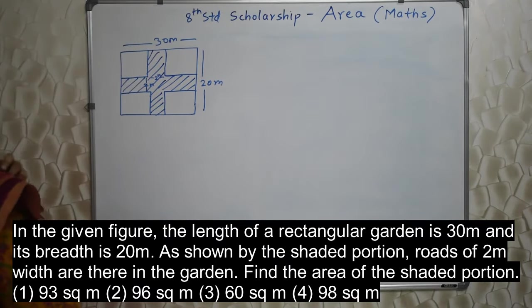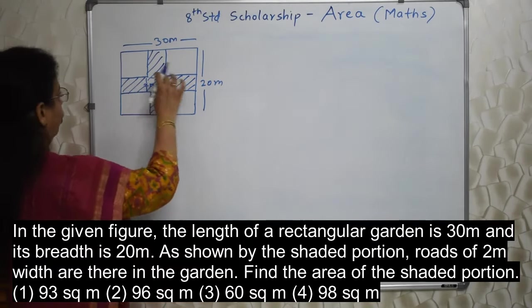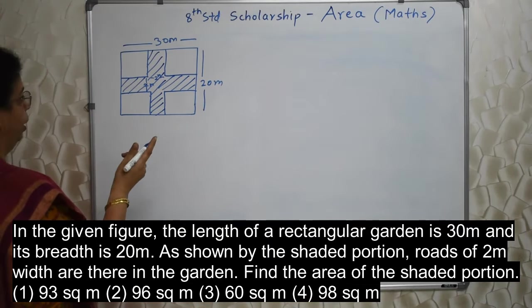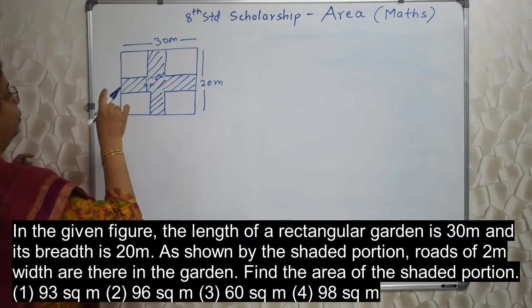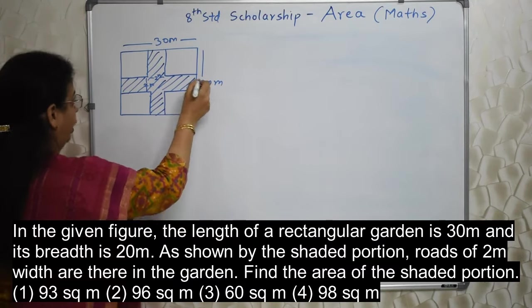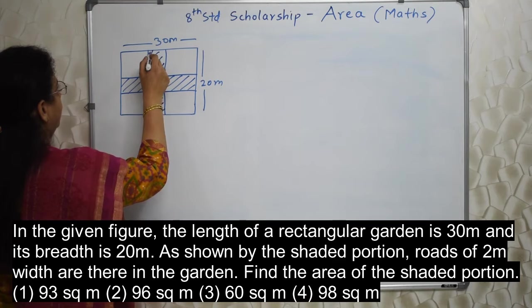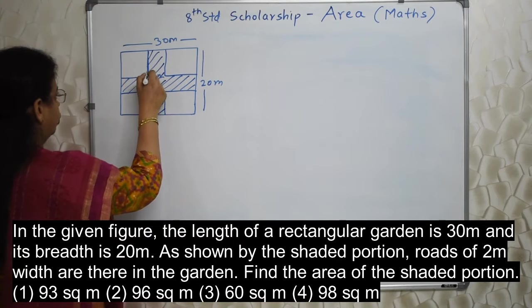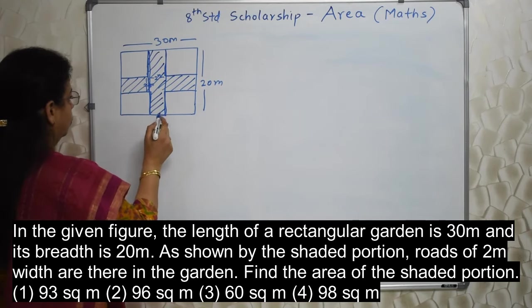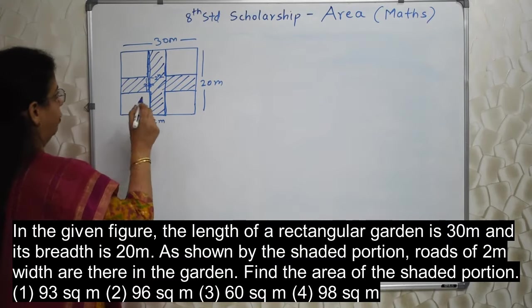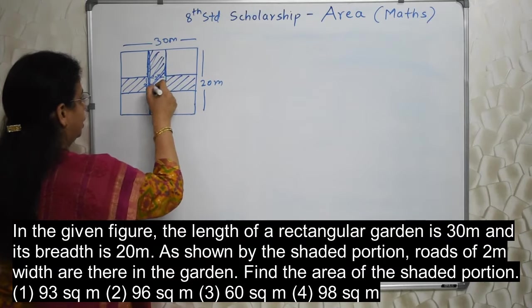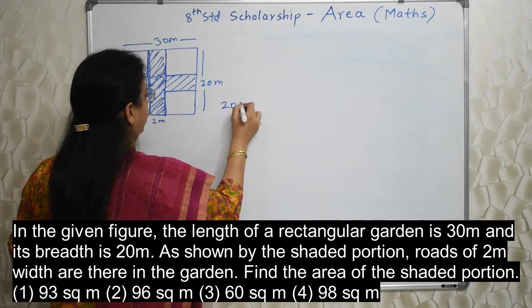How to find out the shaded portion? We do not have the formula for this plus sign shape. So what is to be done? We have to take help of those shapes which are there in our syllabus. This is a rectangle with length 30 meter and breadth 20 meter. So first find out the area of this standing position. Its breadth is 2 meter and length is 20 meter.